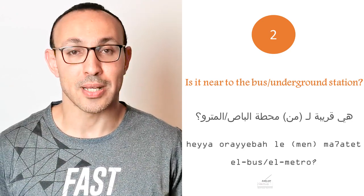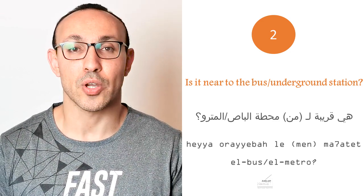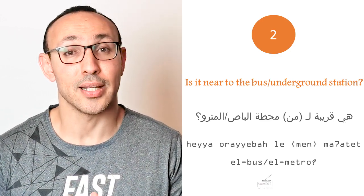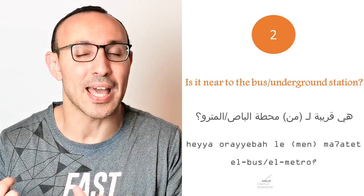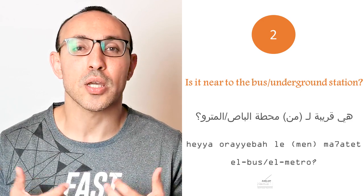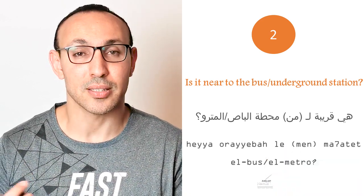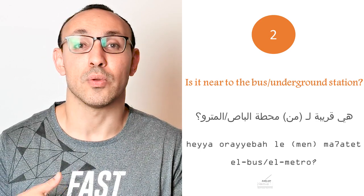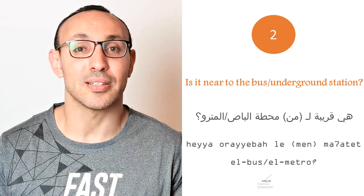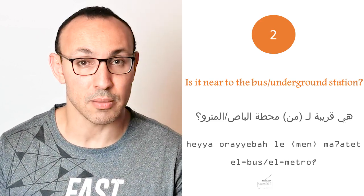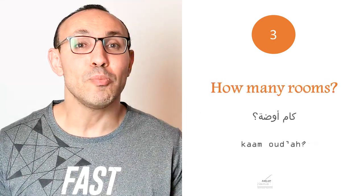The next important phrase is about location. Is it near the bus station? In Egyptian Arabic: هيا أريبة لمحطة البس. هيا is the pronoun referring to the flat, and أريبة means 'near.' You can also ask: لمحطة المترو (near the underground station) or لمحطة الطرام (near the tram station).